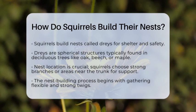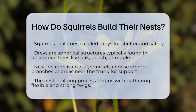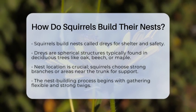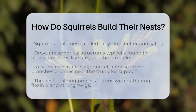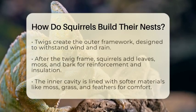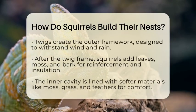The nest-building process starts with squirrels gathering twigs. They carefully select these twigs for their flexibility and strength. The twigs form the outer framework of the nest, woven together to create a strong shell designed to withstand various weather conditions, including wind and rain.